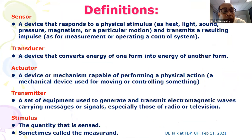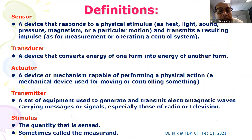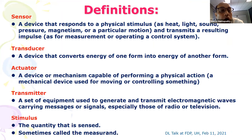While we look at sensors, we come across different terms: sensors, transducers, actuators, transmitters, and stimulants — and they are all very important in sensor networks, wireless sensor networks, or internet of things.